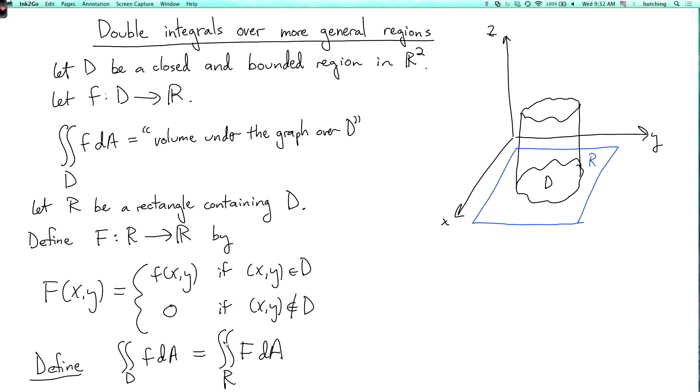The definition of the function capital F is that capital F of xy equals lowercase f of xy if the point xy is in the region D, and it's zero if xy is not in the region D. Finally, we can define the double integral over D of F dA to be the double integral over R of capital F dA. You can prove that this is going to be well defined at least when lowercase f is continuous. The basic example is that the double integral over D of 1 dA is just going to give us the area of D.